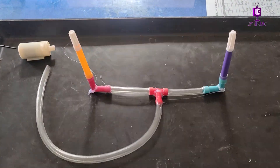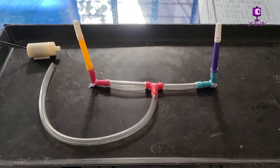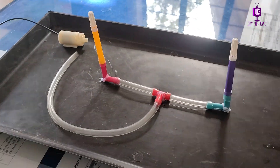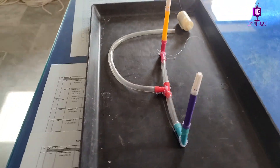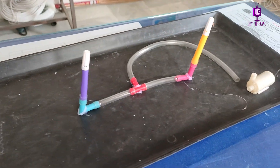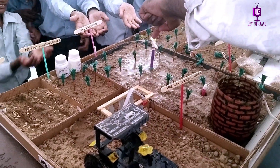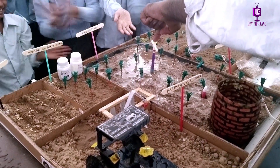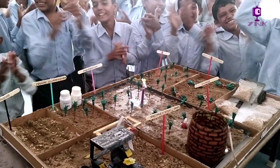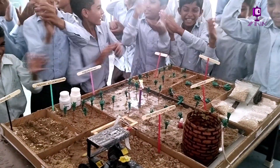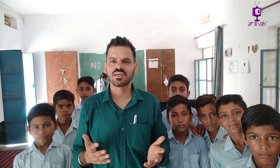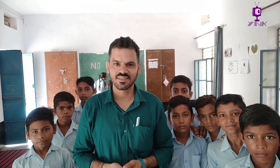Hello and welcome. Today we are diving into a fascinating topic: creating a functional model that showcases some of the most effective and cutting-edge agricultural practices. From preparation of soil to water-efficient irrigation, we will be taking you through the process step by step. So let's roll up our sleeves and get started.